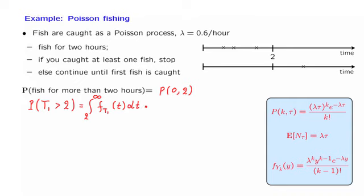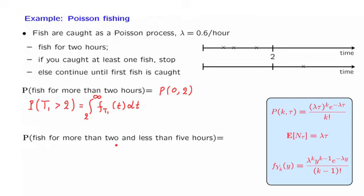Here is our next question, which is a little bit more complicated. What is the probability that you get to fish for more than two hours and also for less than five hours?